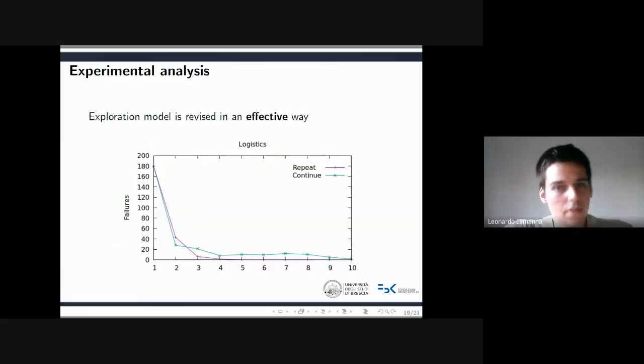In this figure, it's shown the average number of action execution failures for both settings, repeat and continue, for 10 episodes of the logistics domain. For the repeat setting, the number of failures reduces nearly to zero after the fifth episode. Remarkably, even for the continue setting, the number of failures tends to decrease and is close to zero after a few episodes.